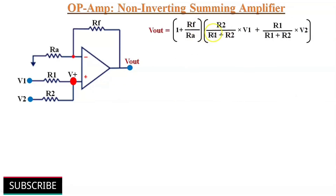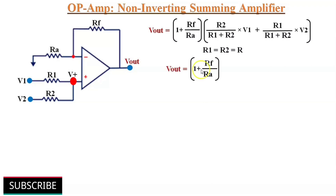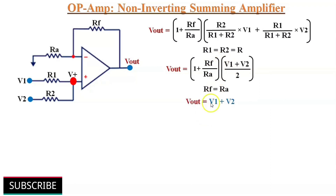If both input resistors R1 and R2 are of the same value R, the equation simplifies to Vout = (1 + Rf/Ra) × (V1 + V2)/2. If Rf equals Ra, the equation simplifies further so that Vout = V1 plus V2. So by using equal value input resistors and equal values of Rf and Ra, we can use this non-inverting summing amplifier to perform addition.